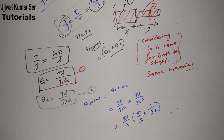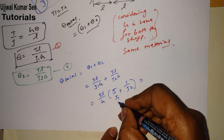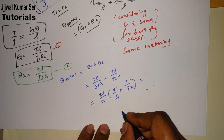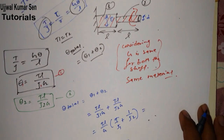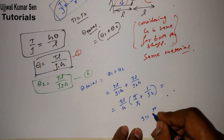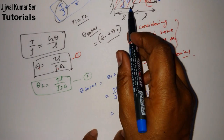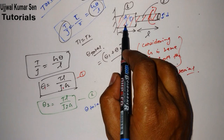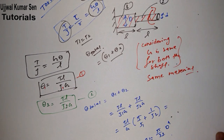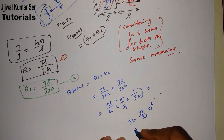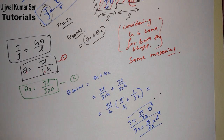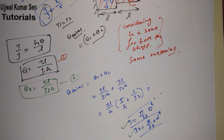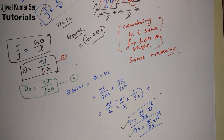Now we substitute the polar moment of inertia values. Suppose the diameter of shaft one is capital D and the diameter of shaft two is small d. Then J₁ = (π/32)D⁴ and J₂ = (π/32)d⁴. We put these values into the equation and simplify to get the answer.